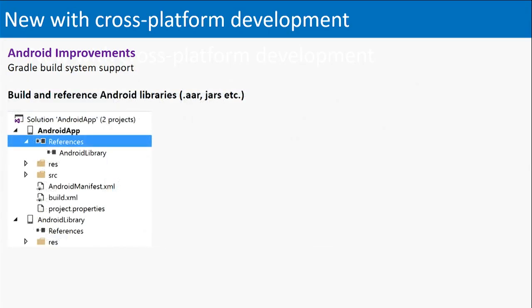As you're building your Android C++ application, from time to time there will be a need for you to access an Android library — this could be an R file or a JAR file. Visual Studio will allow you not only to build these files with this new feature, building and referencing Android libraries, but you'll also be able to leverage them, use them, and package them as part of your Android application.